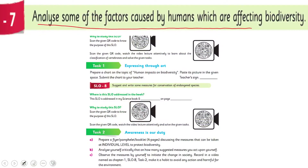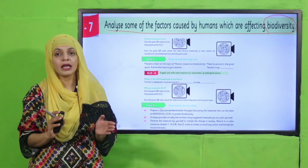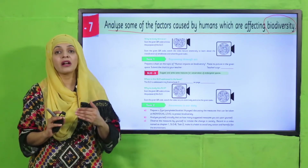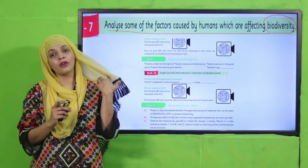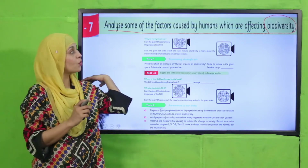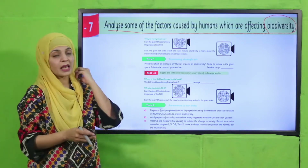My dear students, in previous lectures we discussed living things and living organisms, and how they are very different from one another. Plants and animals have vertebrates and invertebrates, and that is the basis on which we can classify them. So there are diverse groups of living organisms, and now we will move on to this new SLO.